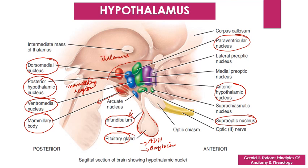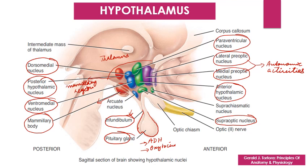The fourth group of nuclei in the hypothalamus is the pre-optic region, which is anterior to the supra-optic region and includes the lateral pre-optic nucleus and the median pre-optic nucleus. These nuclei are concerned with regulating autonomic activities.